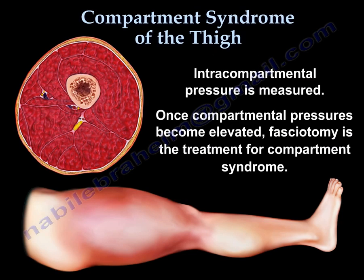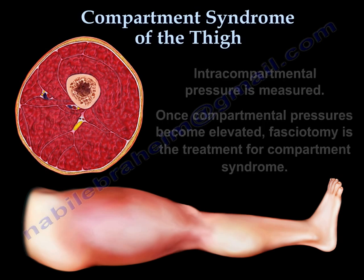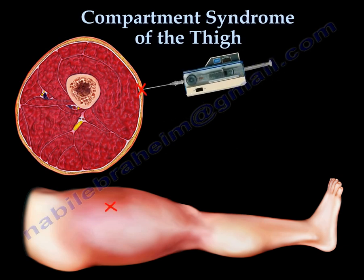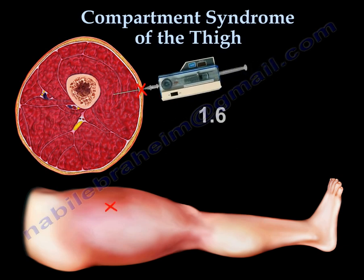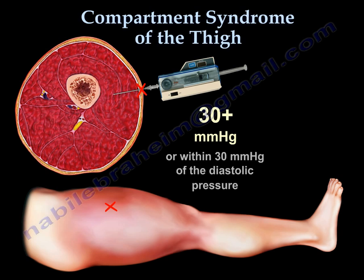Pressure Measurements: once the compartment pressure becomes elevated, fasciotomy is the treatment of choice. When you suspect compartment syndrome of the thigh, the intracompartmental pressure is measured. If the pressure is high, fasciotomy is the treatment. Here is where and how to measure the pressure of the thigh.